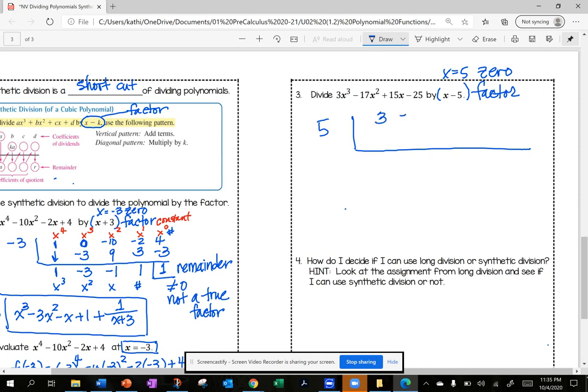So 3, negative 17, 15, and negative 25. I'm going to bring down my 3. 5 times 3 is 15, add down, negative 2. 5 times negative 2 is negative 10. Add down 5. 5 times 5 is 25. Add down 0. My conclusion is I have a true factor because my remainder is 0.